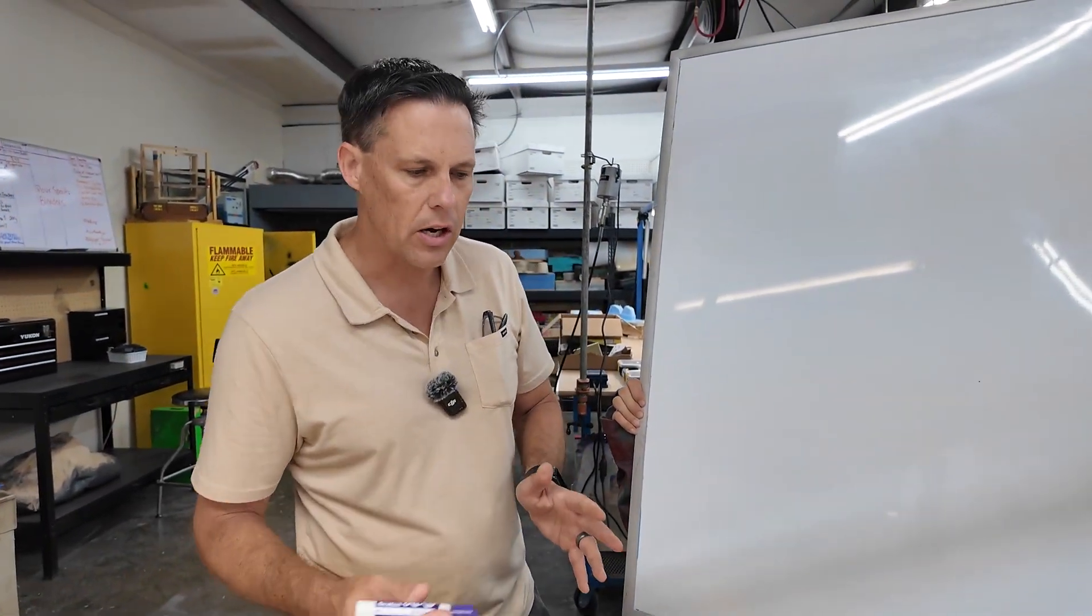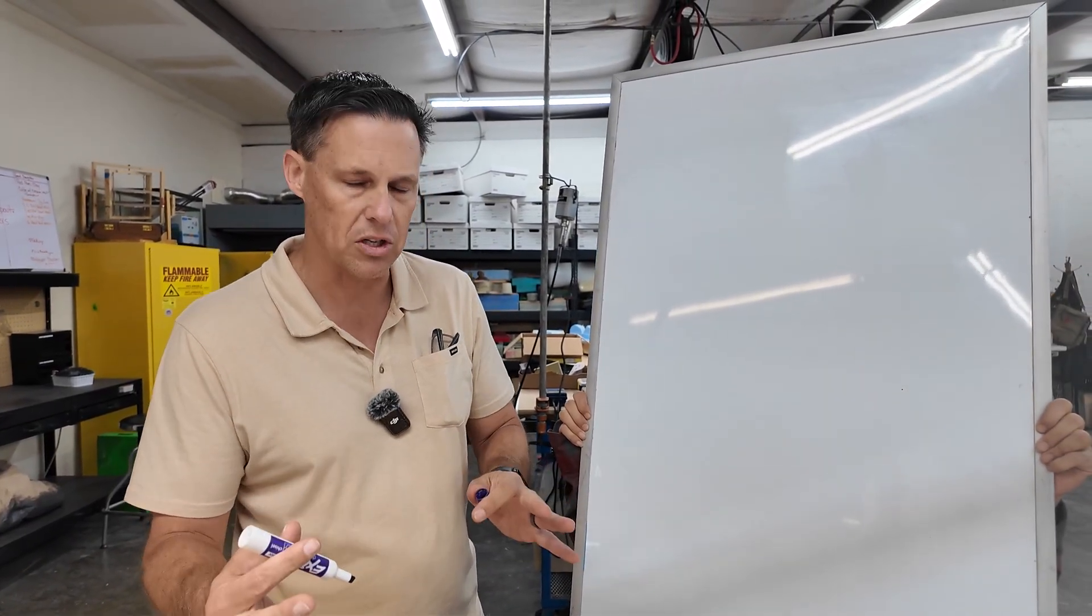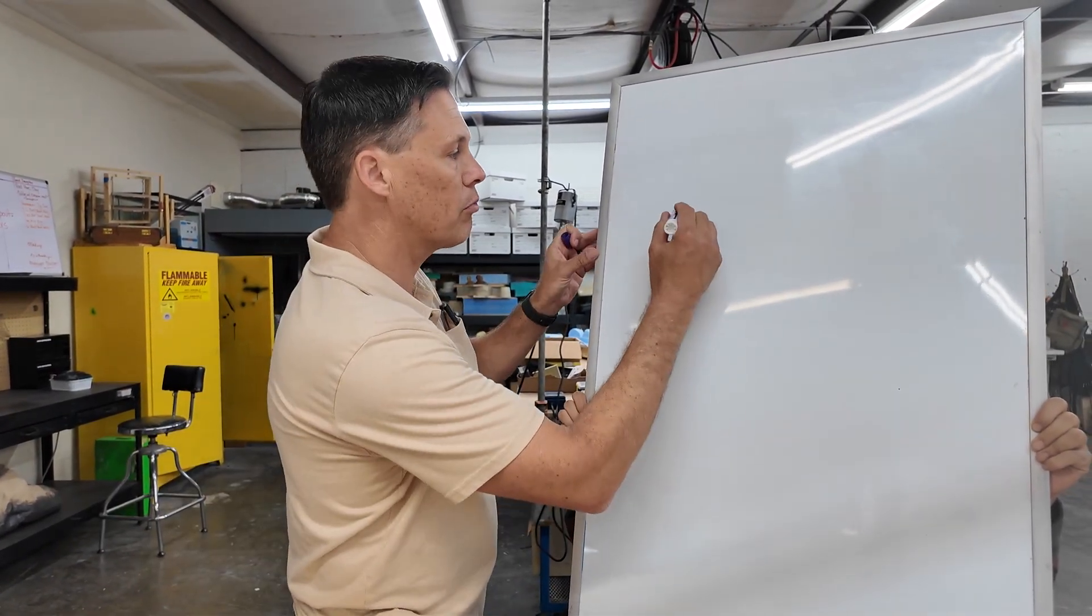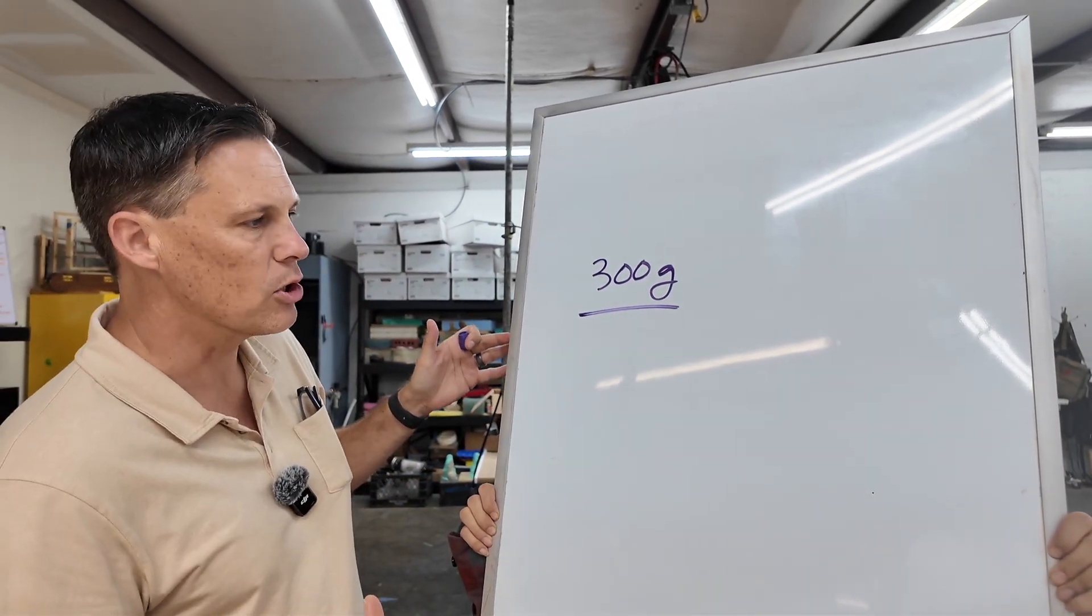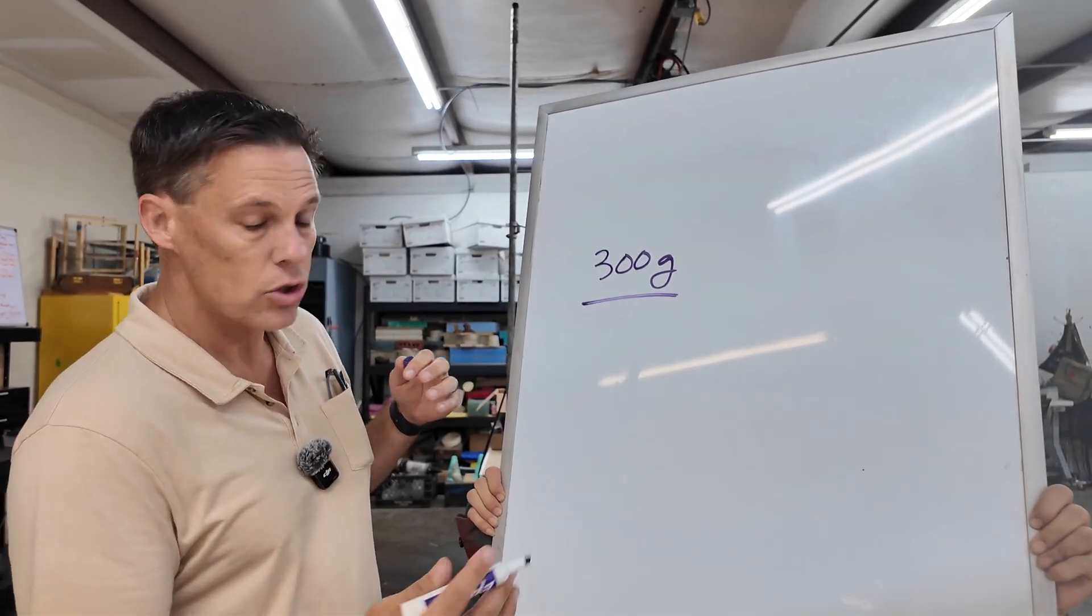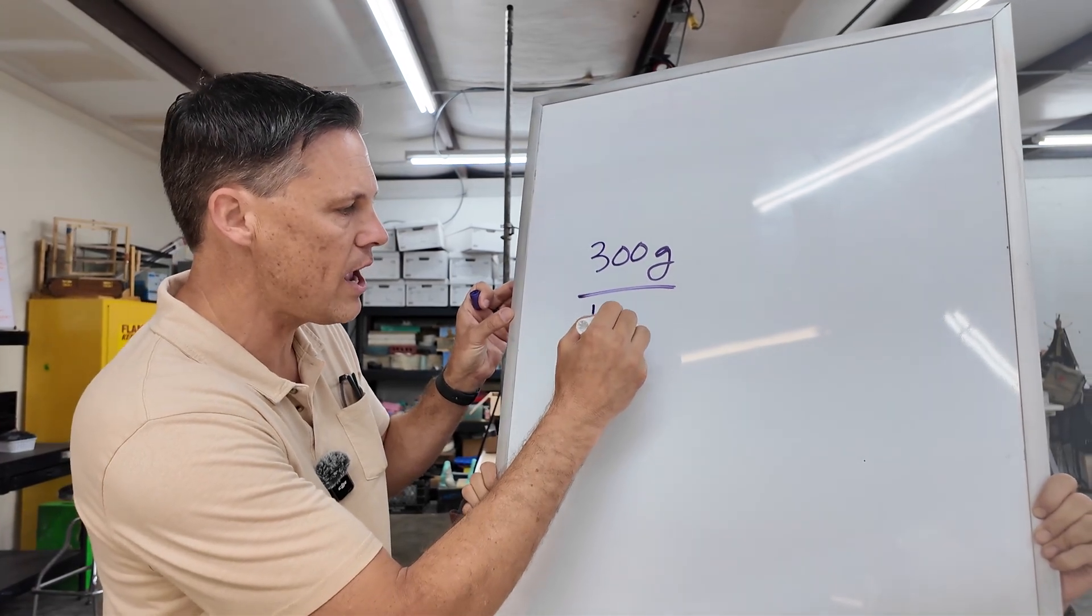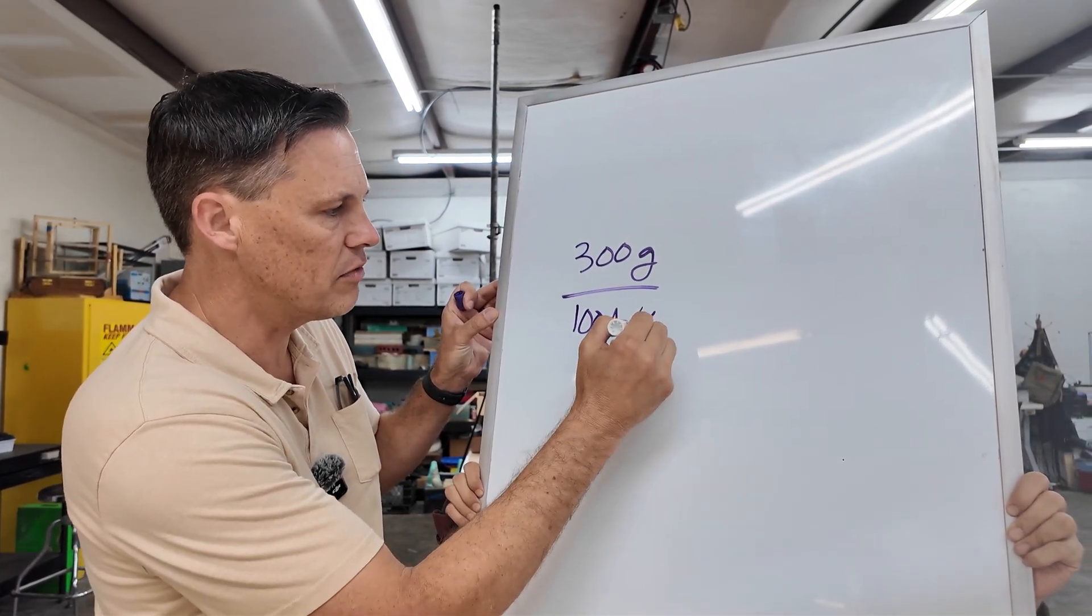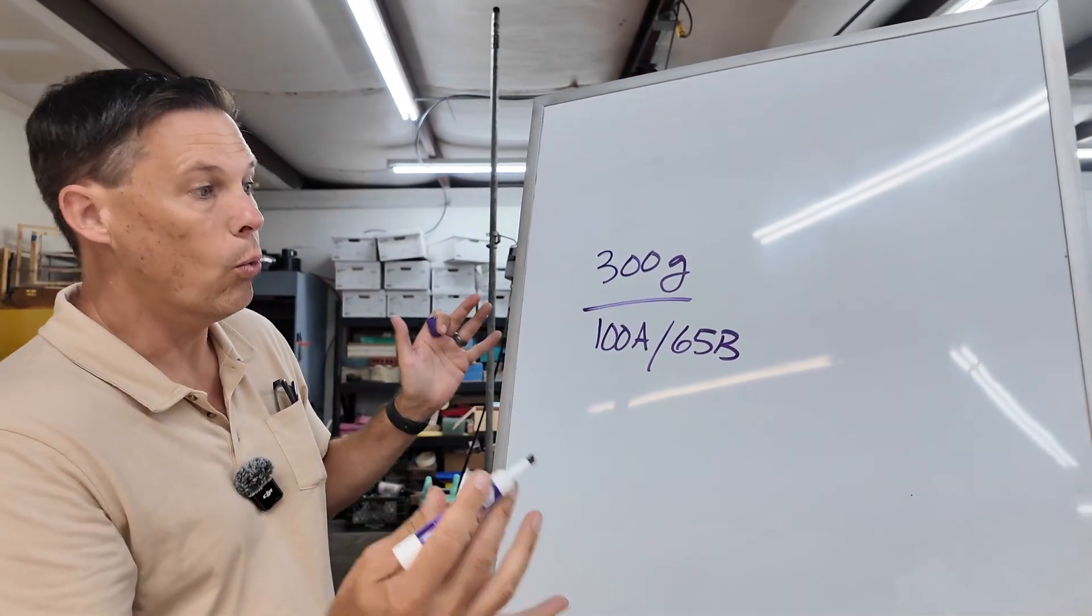A lot of scenarios, we want to mix up some material. I need about, let's say, 300 grams. That's the total. That's what we think that part, or how much material we're going to need to fill that mold. We might have a little extra. We can fine-tune that later. So on a product like this, 100 to 65, that's 100 parts A to 65 parts B. 300 grams. So what do we do?